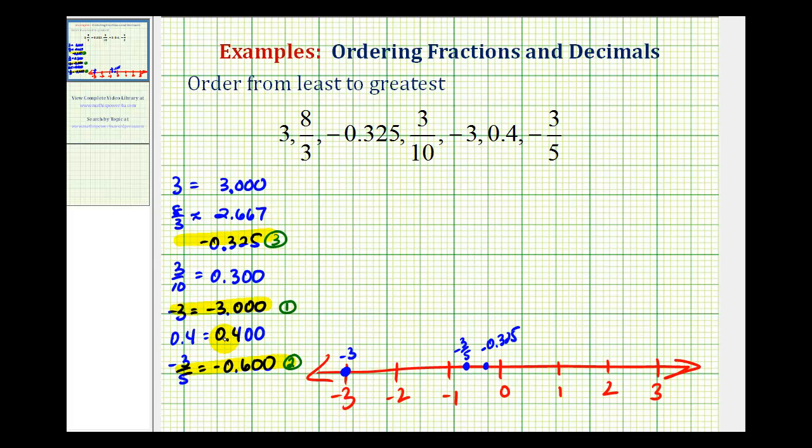Then looking at the positive decimals, 0.300 is going to be smaller than 0.400. So next we'd have three-tenths, maybe somewhere in here. Followed by 0.4, maybe somewhere in here. This was number four, this was number five.